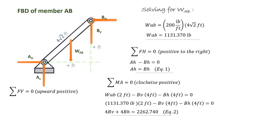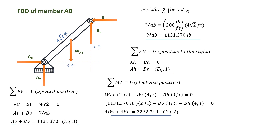Now let's take a summation of forces along the vertical axis, considering positive upward. We have AV plus BV minus WAB equals zero, so AV plus BV equals WAB. Substituting the value of WAB, we now have Equation 3.